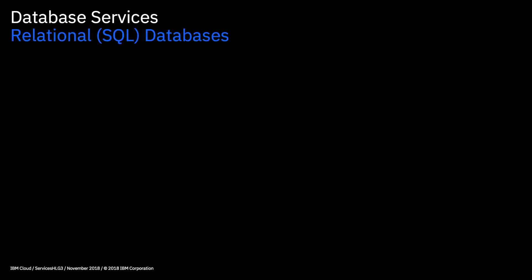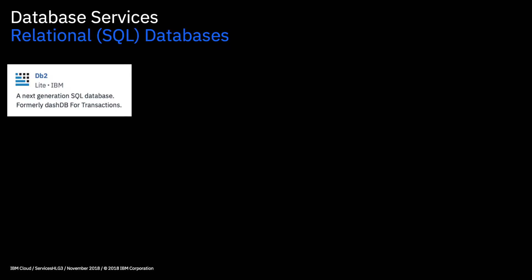Next we have databases, and I'm going to split these into different types. First we have relational databases, or SQL databases — these are the ones which are based on tables and relate to one another through foreign keys and so on. We have DB2, which is a cloud-based instance of IBM's popular DB2 database. Then we have DB2 Hosted. The difference is that DB2 Hosted is dedicated to you, provisioned on a dedicated server, and you have far more administrator access to the instance, as opposed to the regular DB2 service which is part of a shared installation. So if you need more powerful, dedicated resources for your workload, you should probably look at DB2 Hosted.